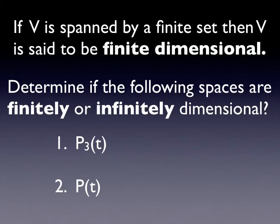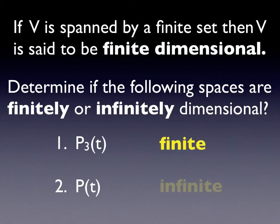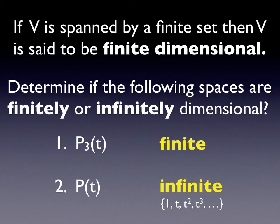Here's an example to determine if the following spaces are finitely or infinitely dimensional. The vector space P3 is spanned by 1, t, and t squared — three vectors that form the basis — so this is clearly finite dimensional. Now consider the set of all polynomials. They would have degree as high as you'd like, so these are infinitely dimensional. A basis for all polynomials would be 1, t, t squared, t cubed, and so on, continuing forever. So there's an infinite number of basis vectors and it's an infinitely dimensional space. In this course we'll primarily talk about finite dimensional spaces, though there are certainly lots of applications of infinitely dimensional spaces.